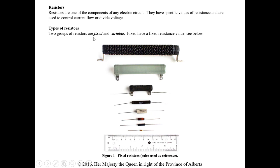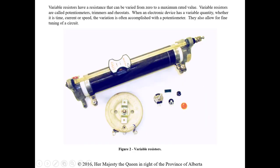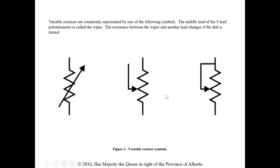There are two types: fixed and variable. Fixed is what it is; variable, like a potentiometer, we can adjust from zero to maximum. These are called potentiometers, trimmers, and rheostats. When an electronic device has a variable quantity — whether time, current, or speed — the variation is often accomplished with a potentiometer. We're going to see how a resistor in a circuit with a capacitor and inductor can change the time it takes to reach its voltage.